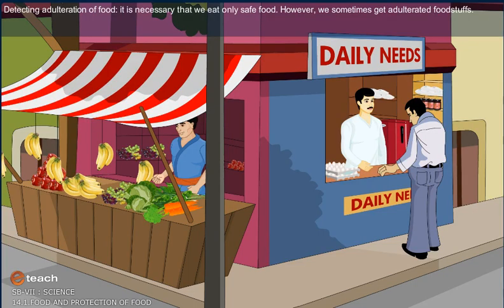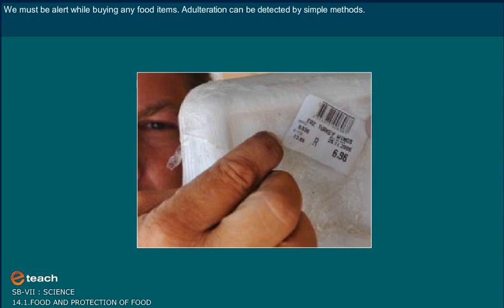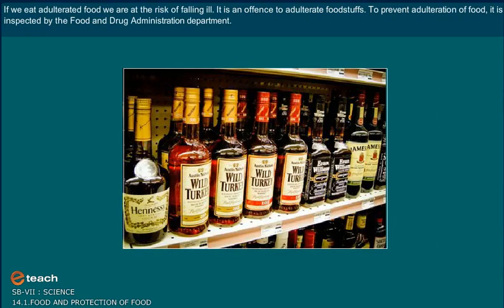Detecting adulteration of food. It is necessary that we eat only safe food. However, we sometimes get adulterated food items. We must be very alert while buying any food items. Adulteration can be detected by simple methods. If we eat adulterated food, we are at the risk of feeling ill. It is an offense to adulterate food items. To prevent adulteration of food, it is inspected by the Food and Drug Administration Department.